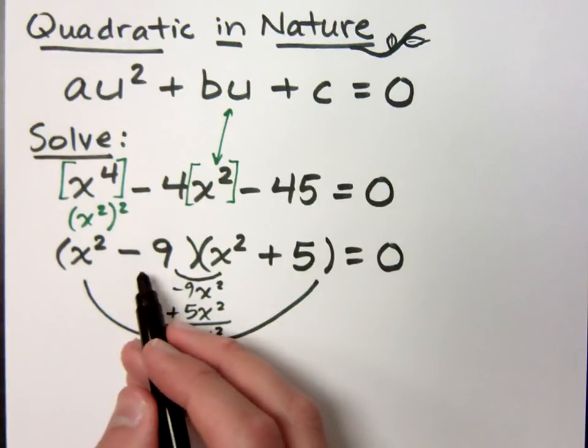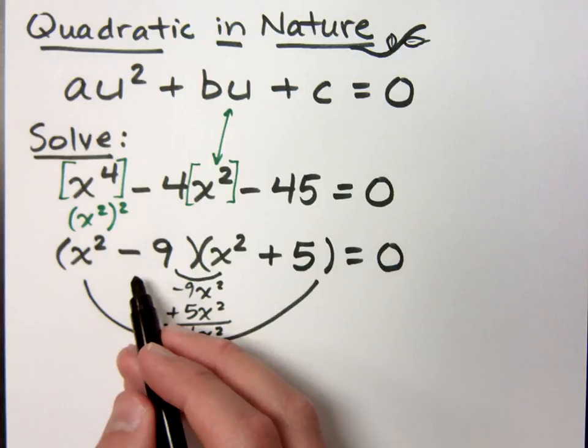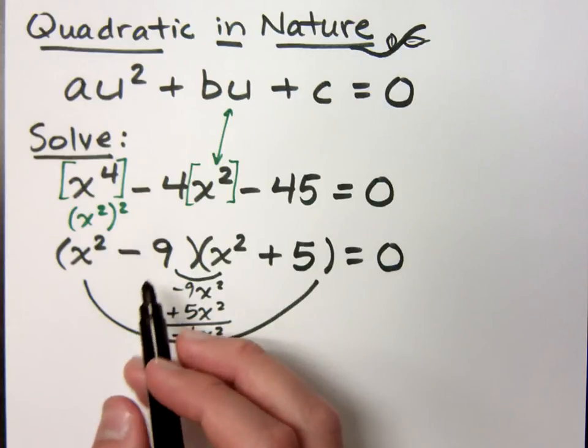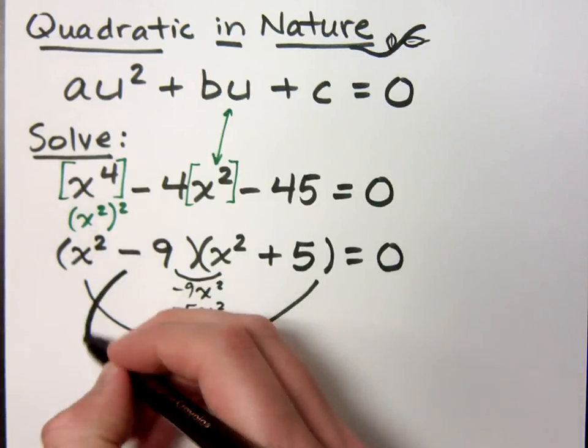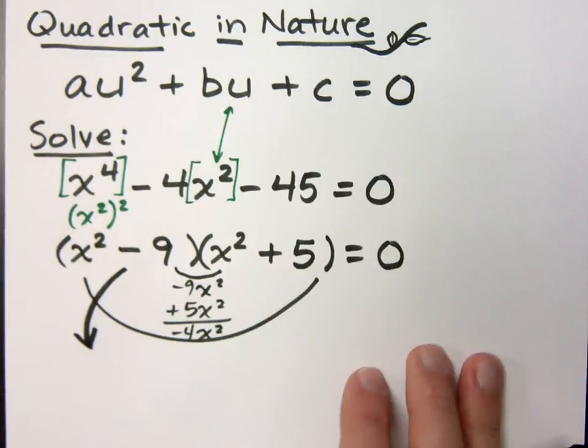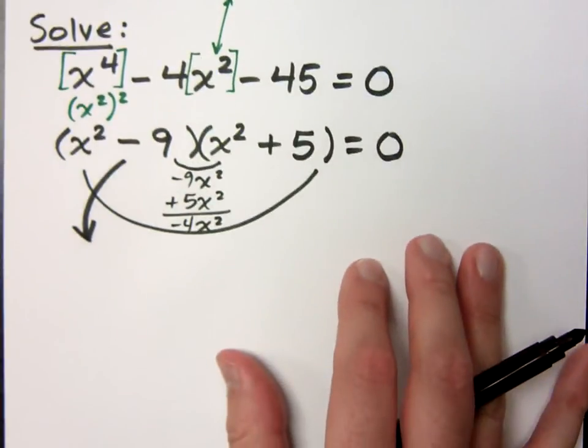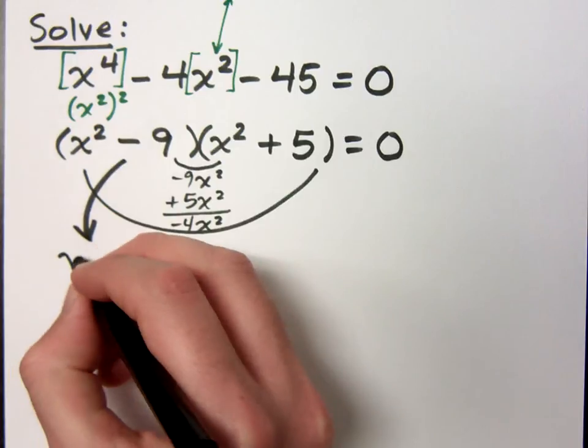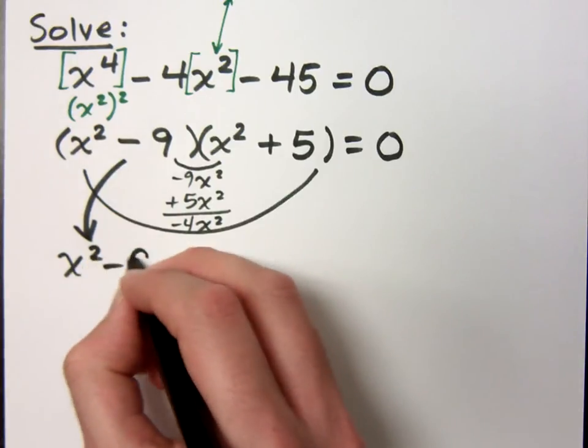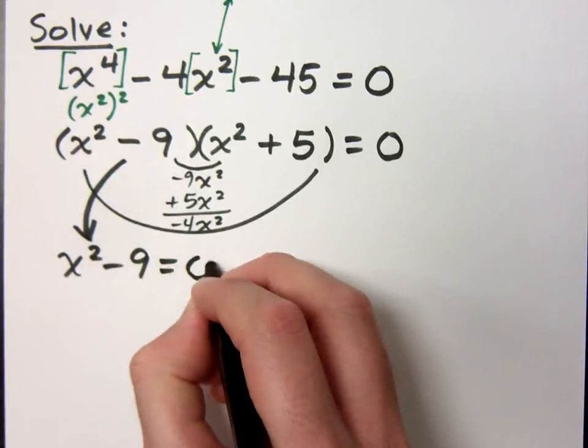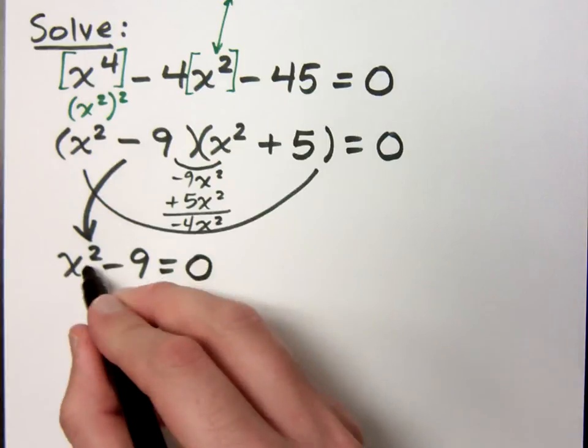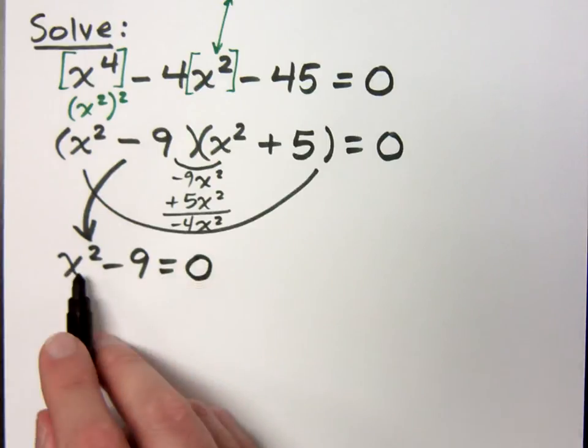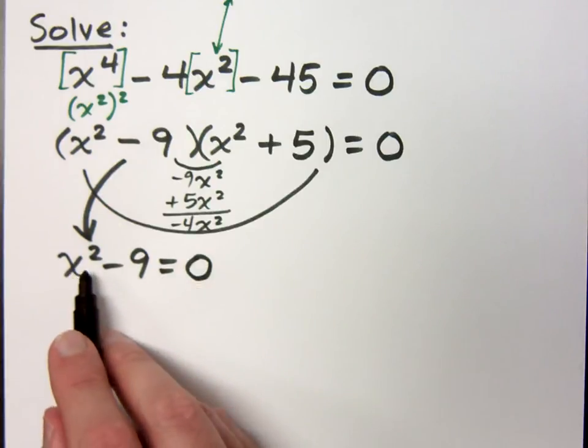x² - 9 does factor as the difference of squares, but I'm not going to show that right now. What I do want to show is how we finish this guy using not only the zero factor theorem, but also the square root property. Because if I write x² - 9 = 0, you know that I can solve this guy using the square root property.